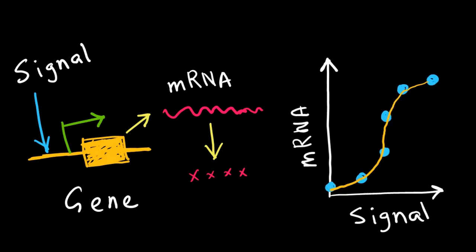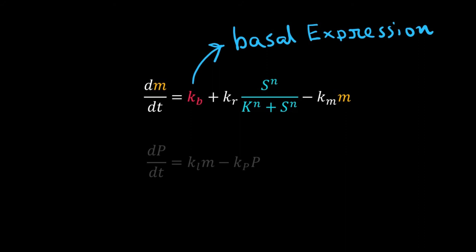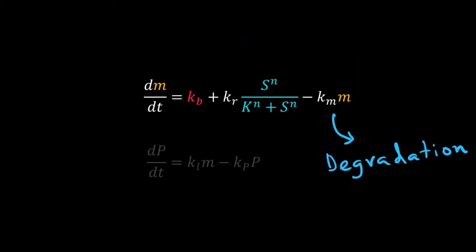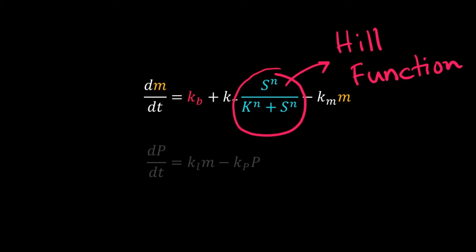In many inducible systems, induction of transcription follows a sigmoidal behavior. For example, if you induce a lac operon by IPTG, you notice that transcription is very low at a low dose of IPTG, but after crossing a threshold dose, transcription increases enormously. While writing ODEs for gene expression, we try to capture that threshold or sigmoidal behavior. In our system of ODEs for an inducible system, M is mRNA, P is protein, kb is the rate of basal or leaky expression even in the absence of an inducing signal, and km times M is the rate of degradation of mRNA. The middle component is for induction of transcription by signal S, and for that we use a Hill function.